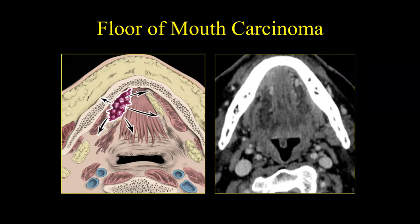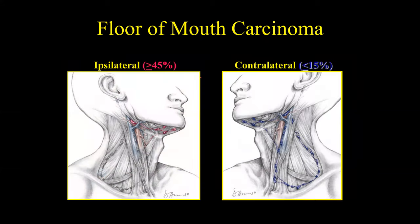In floor of mouth carcinoma, a subtle well-localized lesion most likely involves level 2 on the ipsilateral side, with some involvement of the level 1 lymph nodes. There is not much likelihood of contralateral involvement. So again, ipsilateral lymph nodes primarily involving level 2 and level 1.